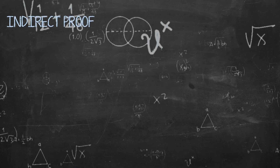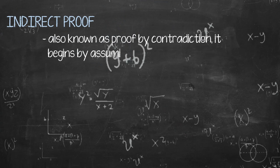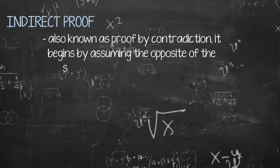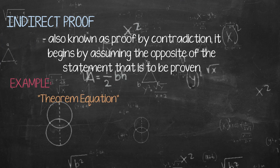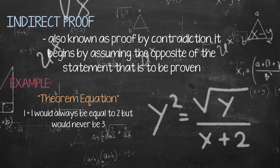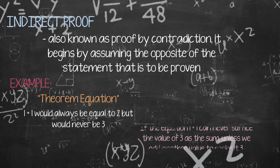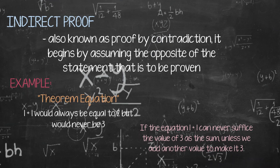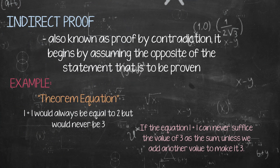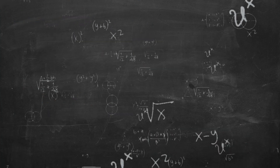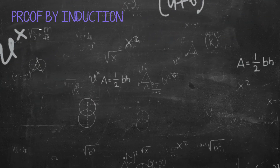Indirect proof, also known as proof by contradiction, begins by assuming the opposite of the statement that is to be proven.